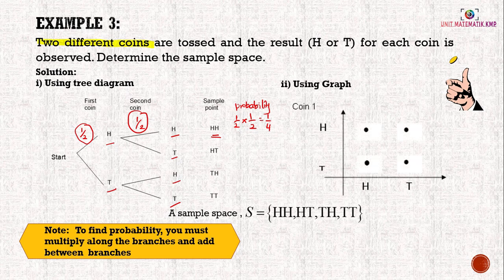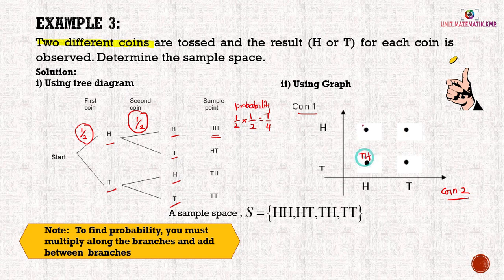Another method to determine the sample space is by using a graph. This is coin 1 and this is coin 2. From the graph we can see that there are 4 possible outcomes in the sample space: HH, HT, TH, and TT. We get the same answer whether using a tree diagram or a graph.